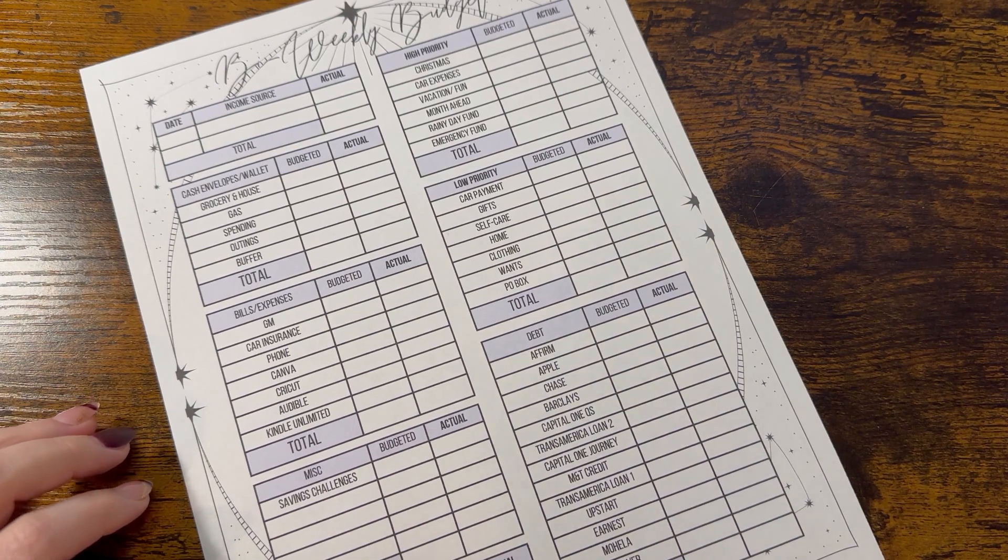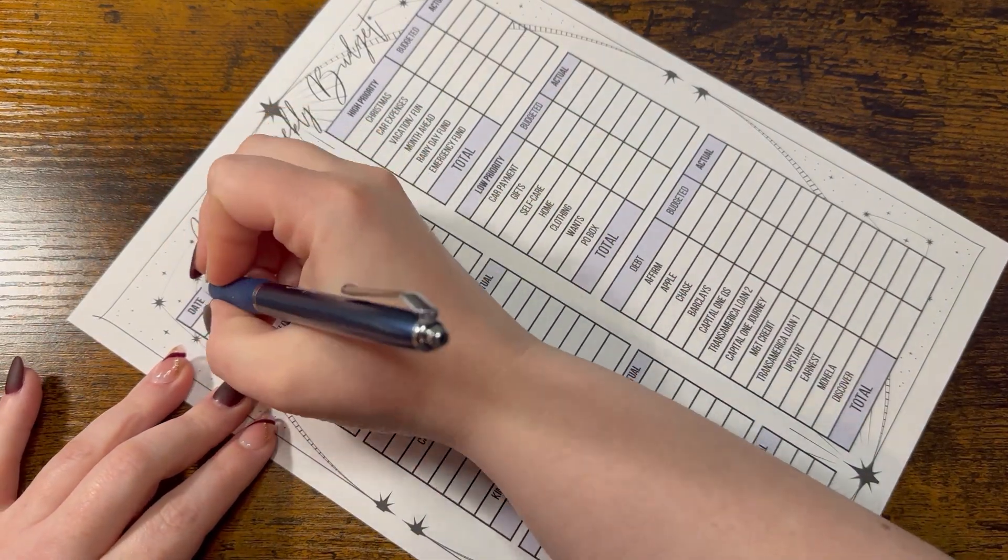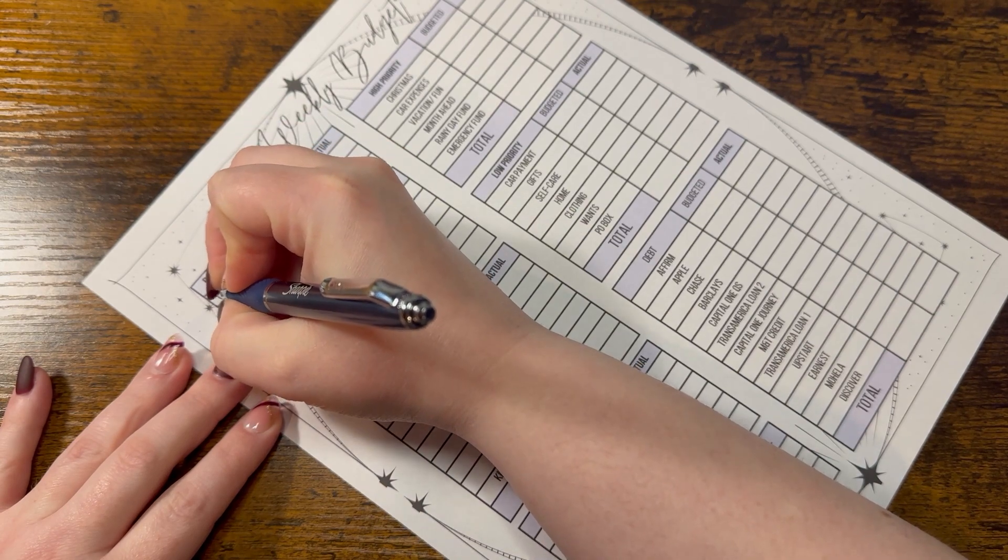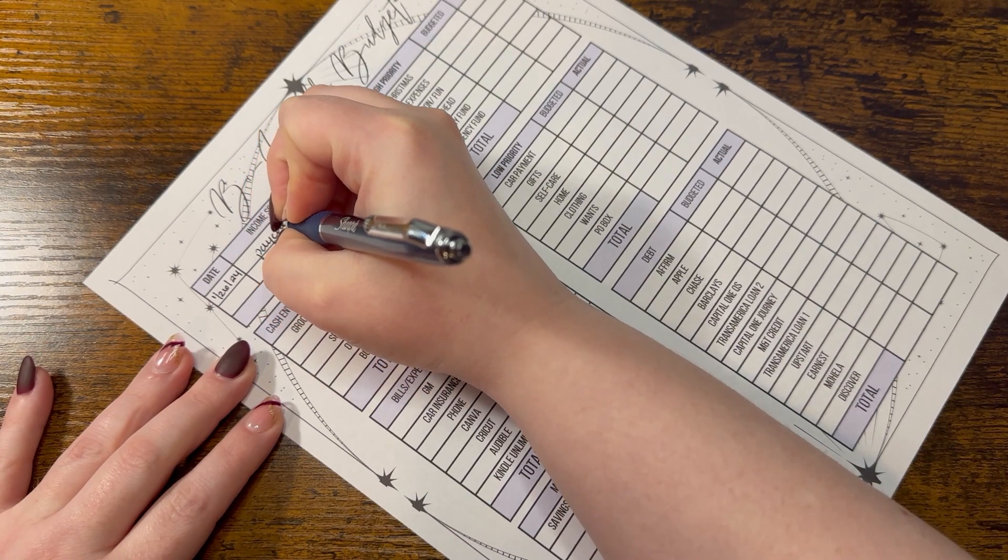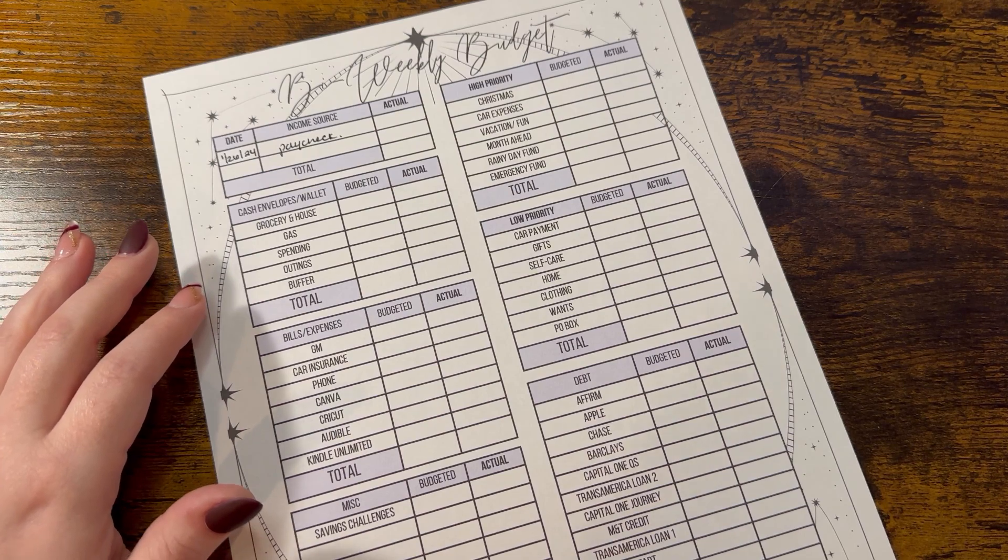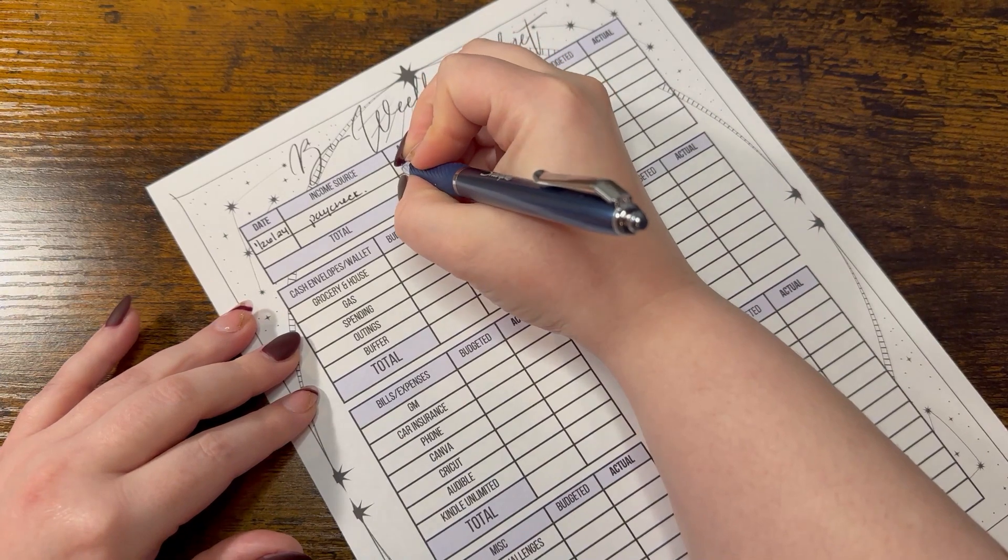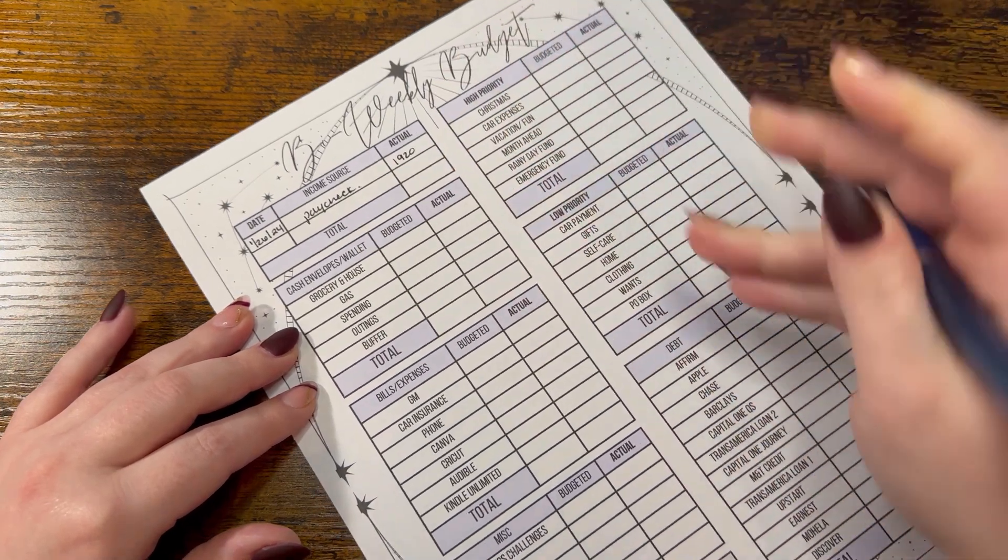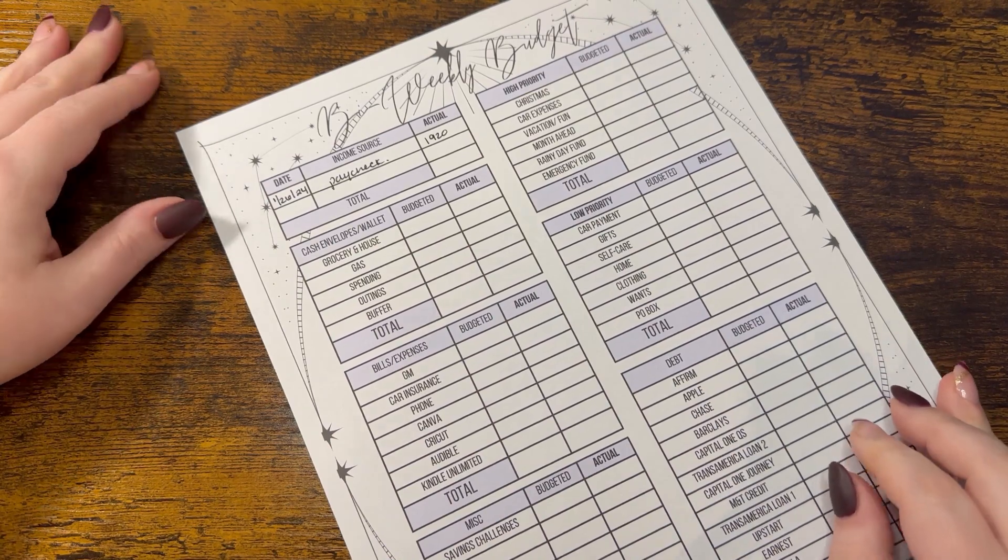So we're just going to get right into it. My check this week was a little higher because I got a reimbursement for insurance. We are looking at $1,920.78 but I don't usually write the change on the form.